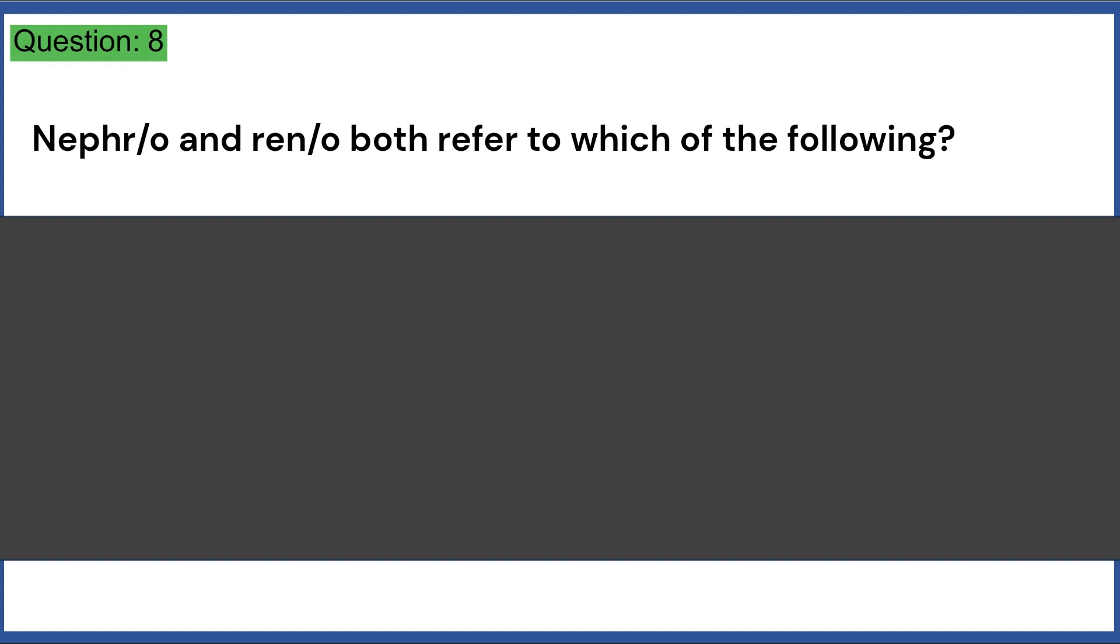Nephro and reno both refer to which of the following? a. Heart b. Kidney c. Ear d. Bone e. None of the above. Answer, B.